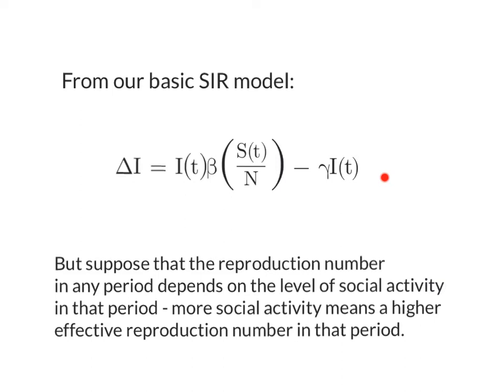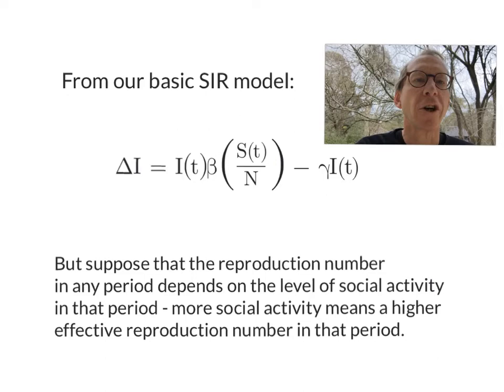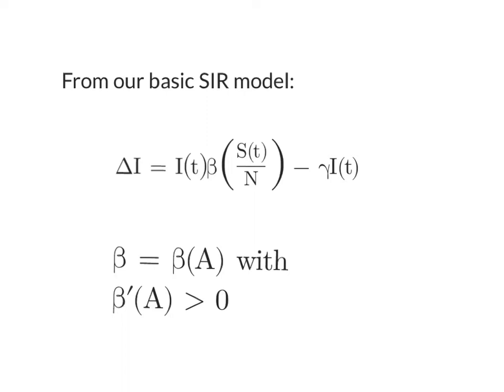The change to this equation that we want to make to bring in the economics is that now the number of people an infected person bumps into is going to depend on the level of social activity occurring. In other words, this beta term will now depend on our level of social activity, capital A. To bring in the economics, we want beta to be a function of social activity A. The higher the level of social activity, the more likely an infected person is to bump into and infect other people — so we'd expect beta to be increasing in the level of social activity.